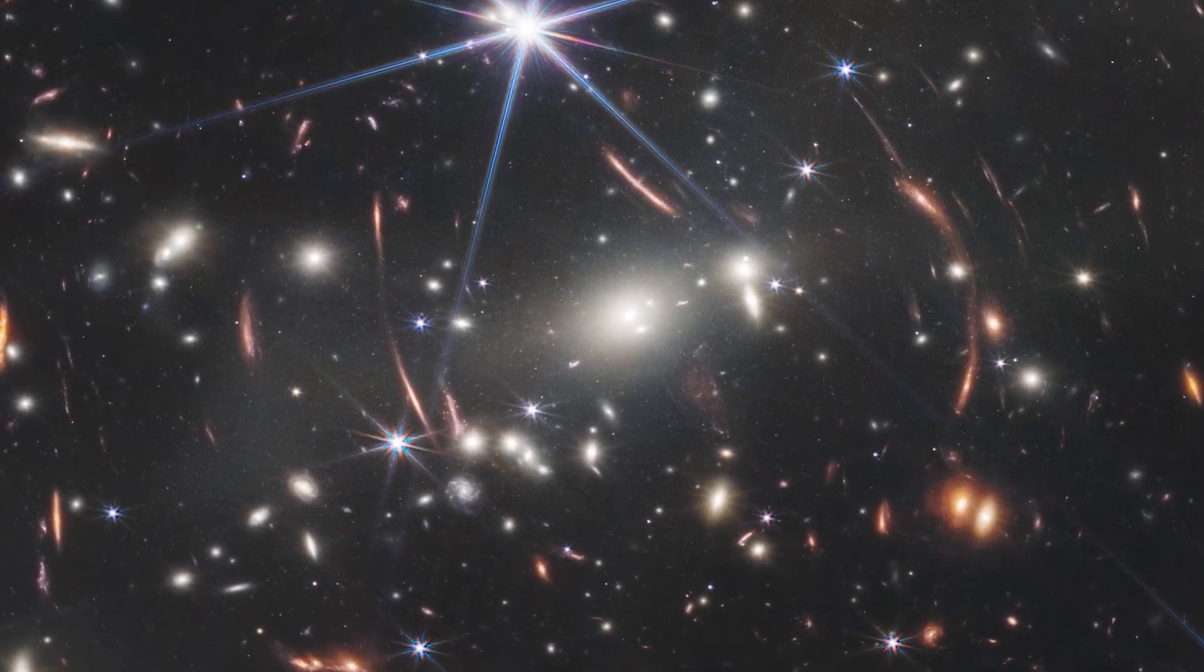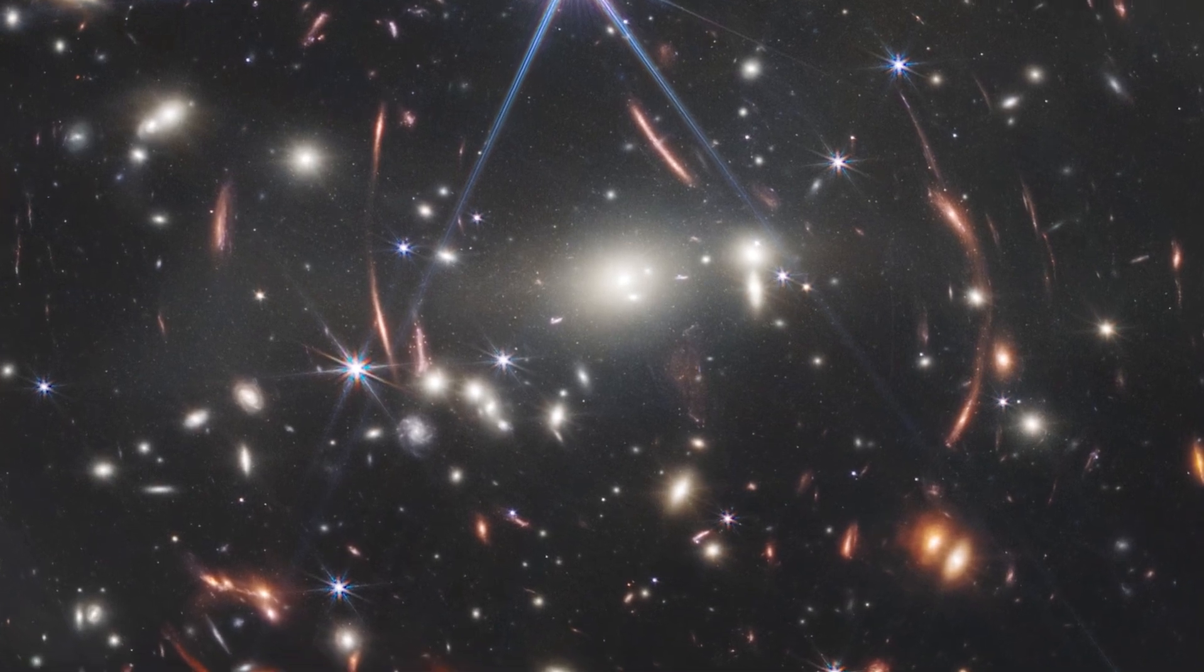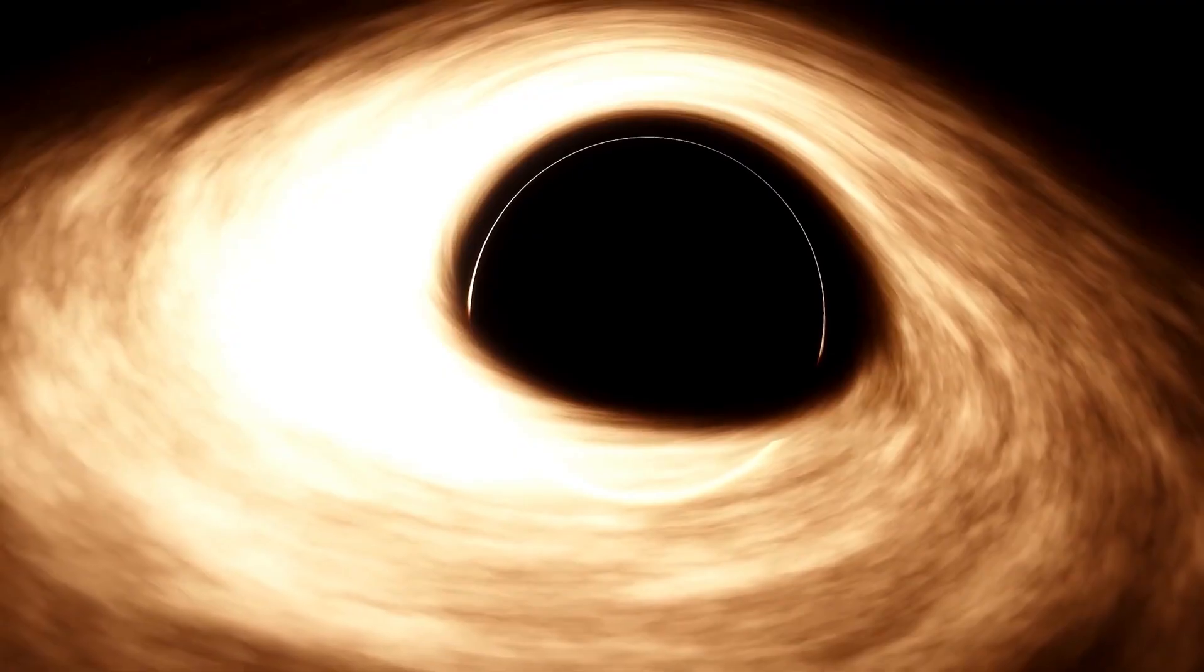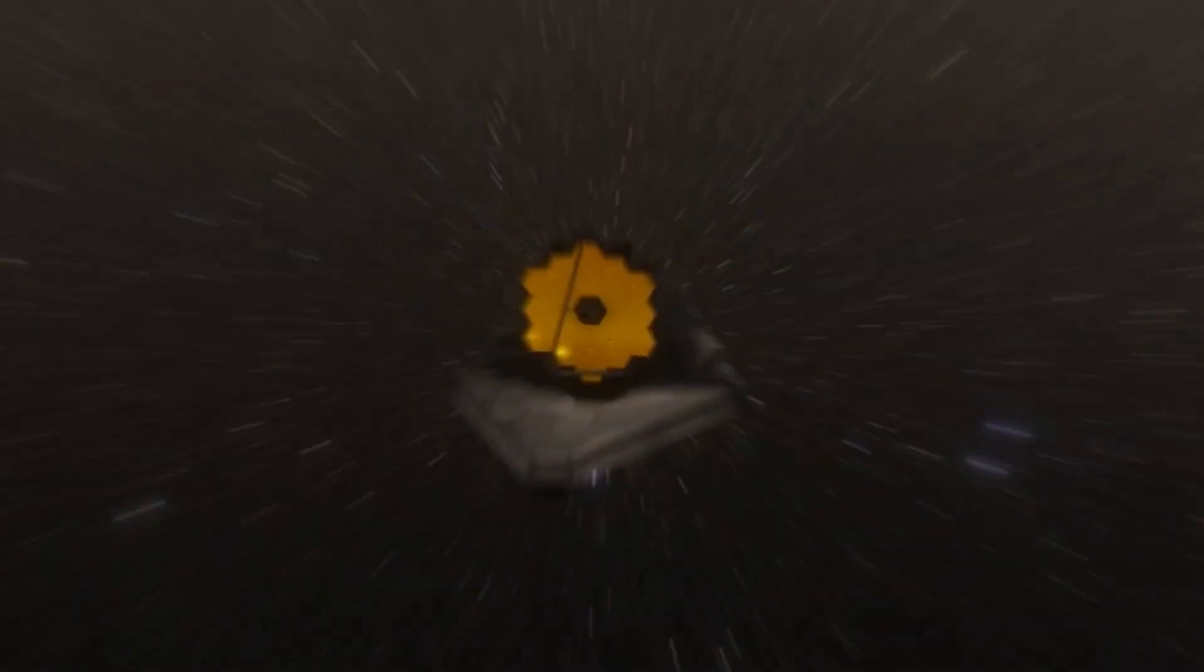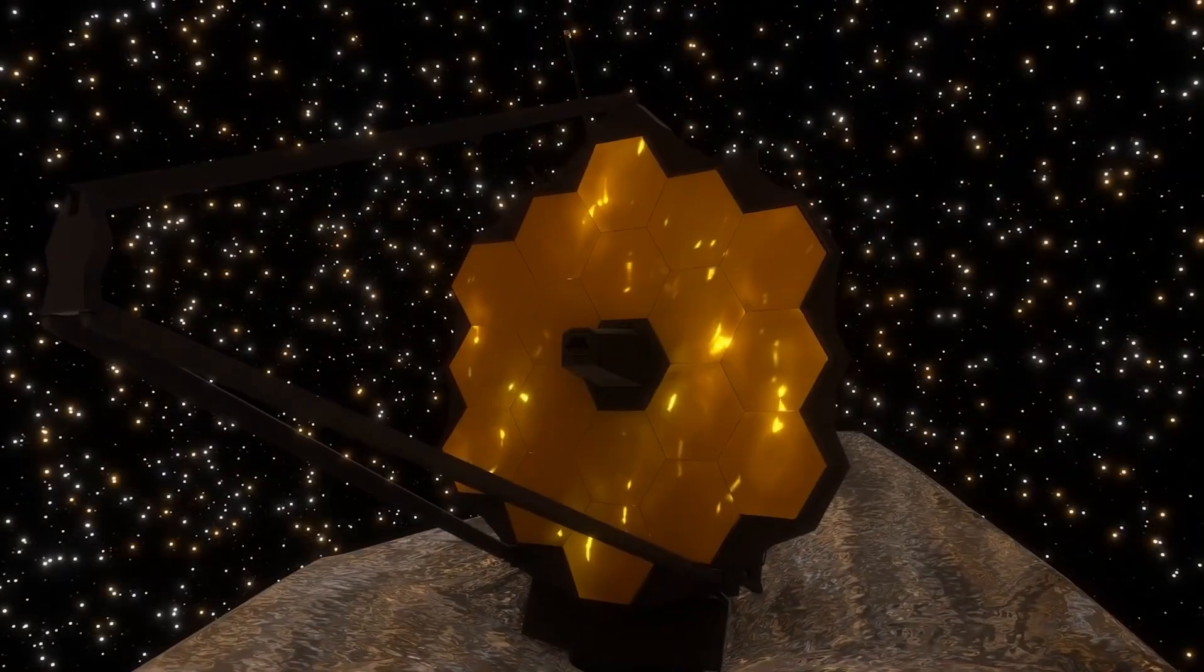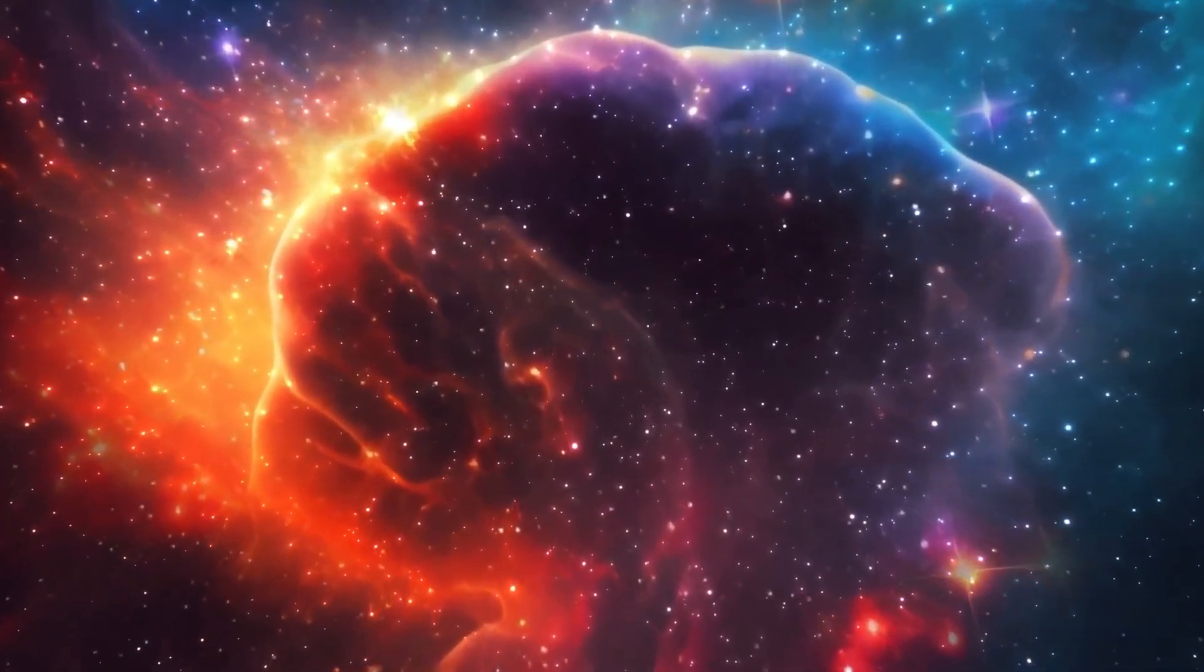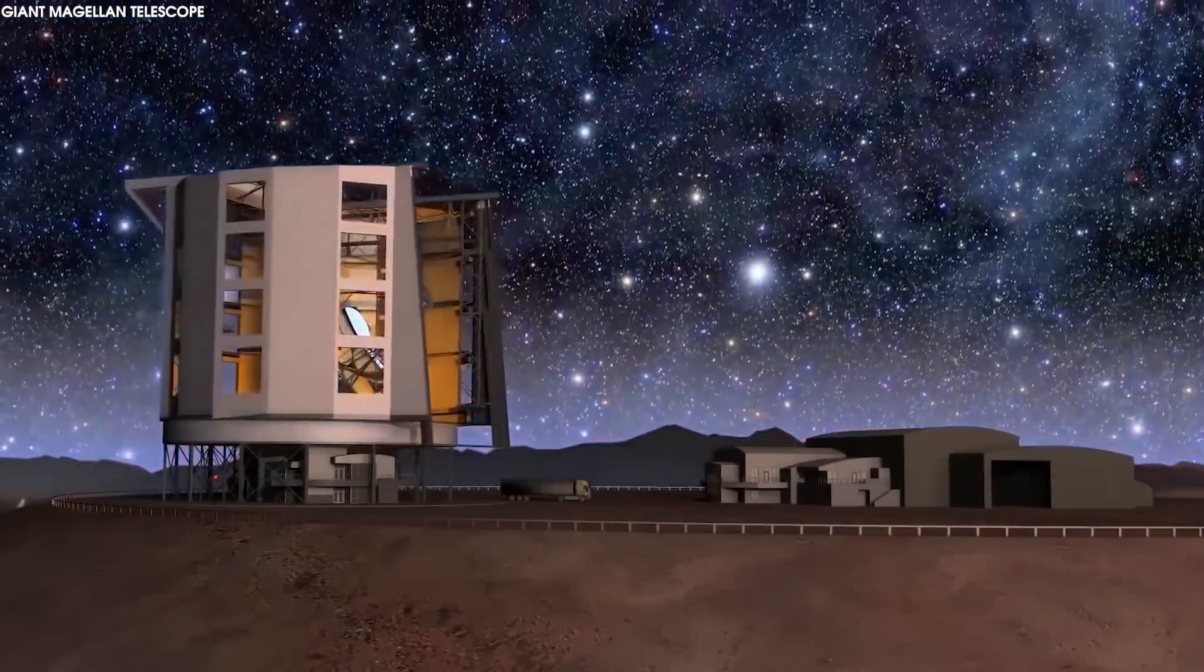Look far enough back in time and almost everything we know about our universe could have been different. Matter and energy existed in different forms than they do today and they may have experienced forces that have not yet been discovered. Matter likely interacted in ways that it no longer does and space and time themselves may have behaved differently than they do in the world we know now.